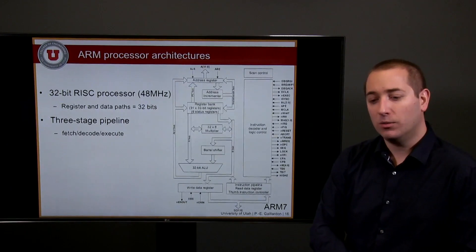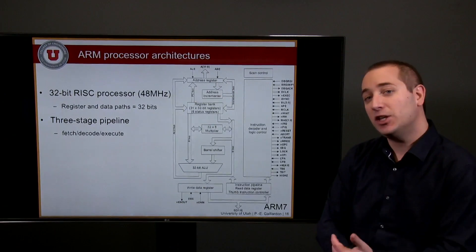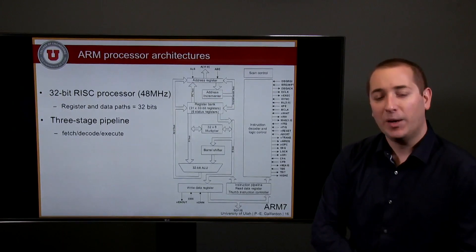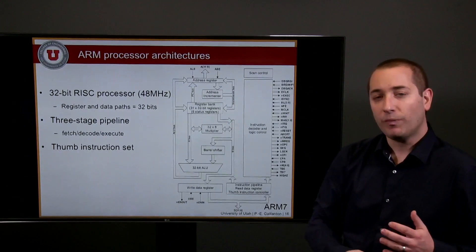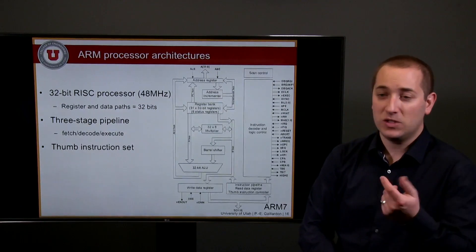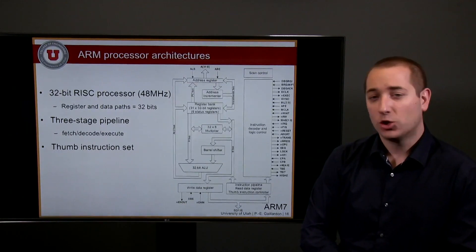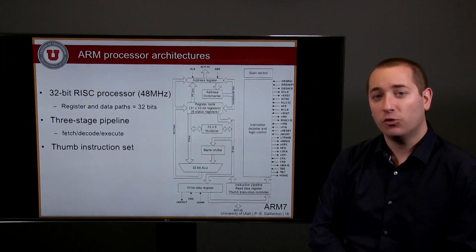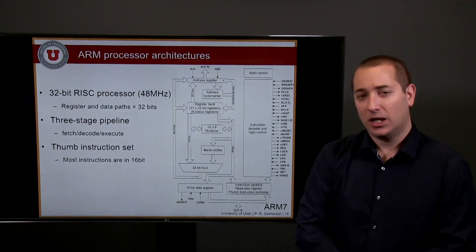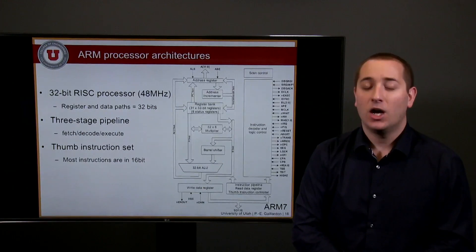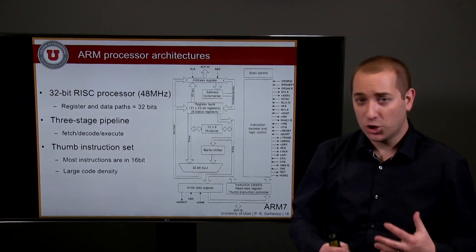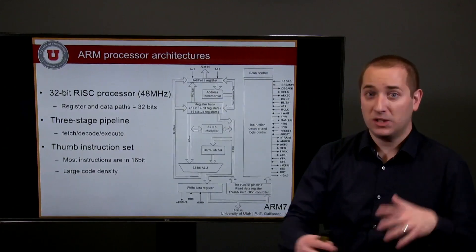The three-stage pipeline of the ARM7 architecture consists of fetch, decode, and execute operations — as discussed in the previous video on traditional microprocessor pipelines. The ARM7 architecture uses the Thumb instruction set, created by ARM, which defines how opcodes are encoded and is designed to minimize memory footprint. Despite the architecture supporting 32-bit data words, most instructions are encoded on 16 bits, giving great code compactness — you can fit two instructions in a single word instead of only one.